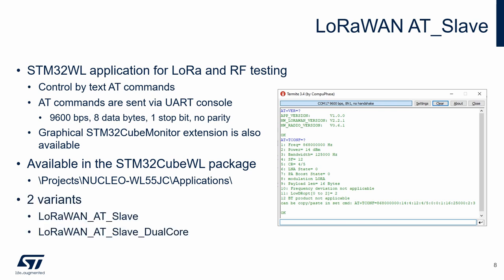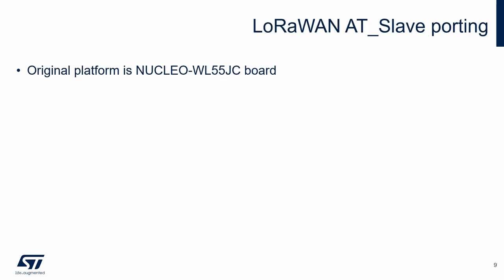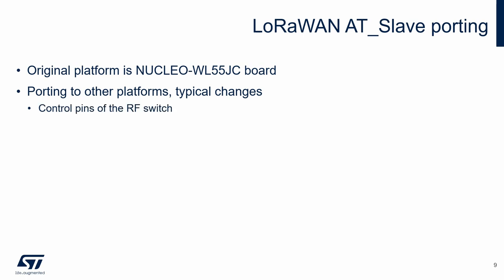There are two variants of the application: one for single-core and one for the dual-core version of STM32WL. The original platform of the AT Slave is the STM32WL Nucleo board, but it can be ported to other platforms. Typical changes needed during porting include control pins of the RF switch, replacement of LSE clock source if not available, and replacement of LPUART if not available. Other changes depend on the specifics of the target platform.